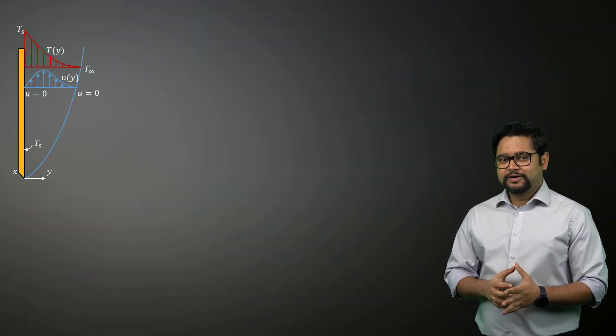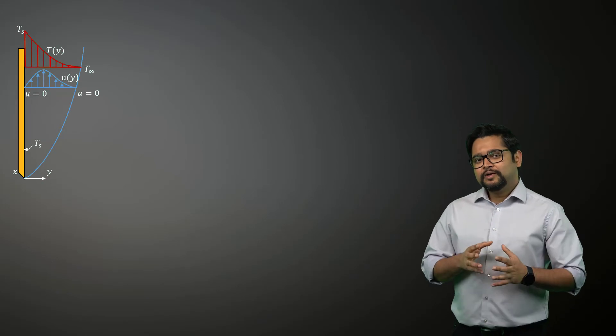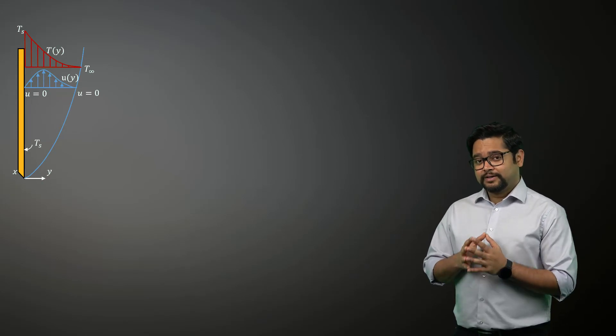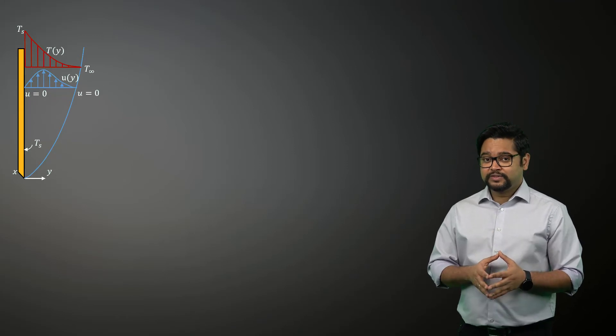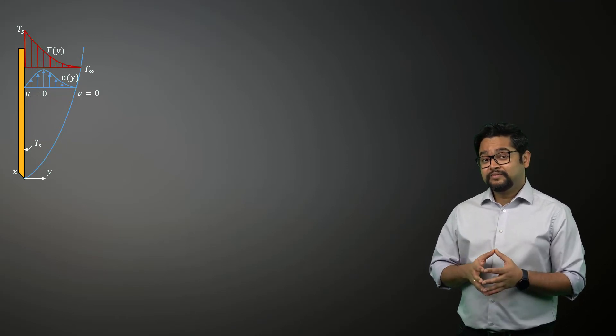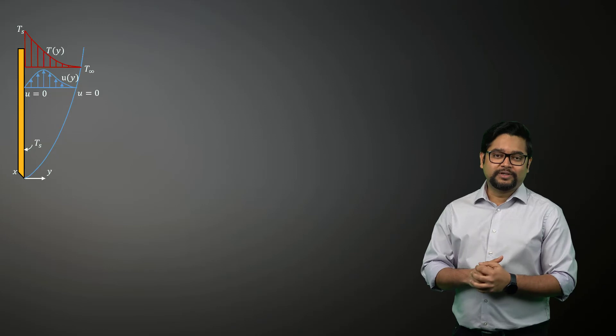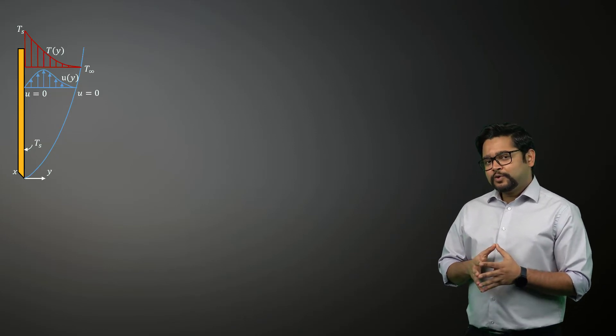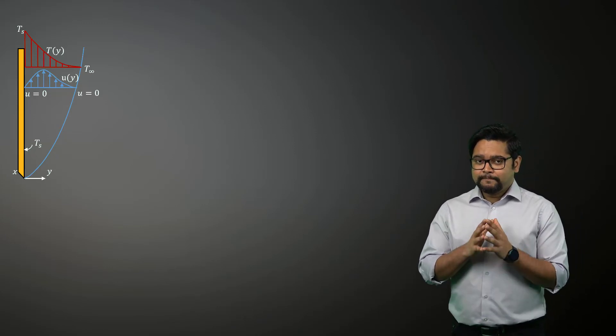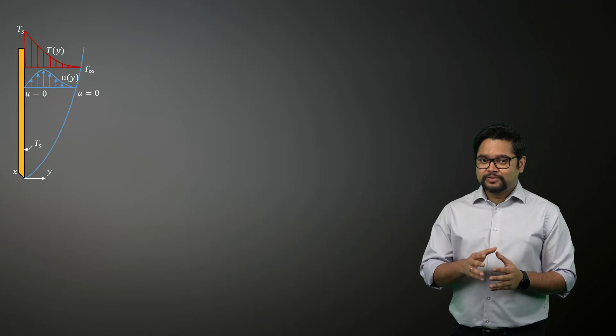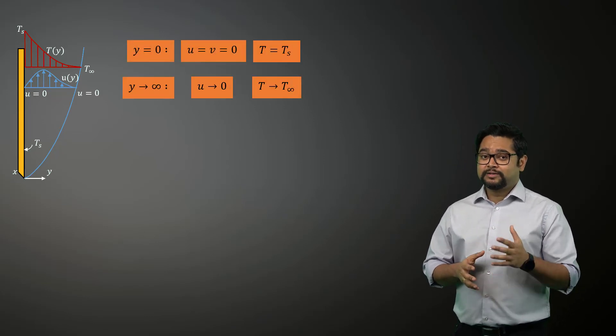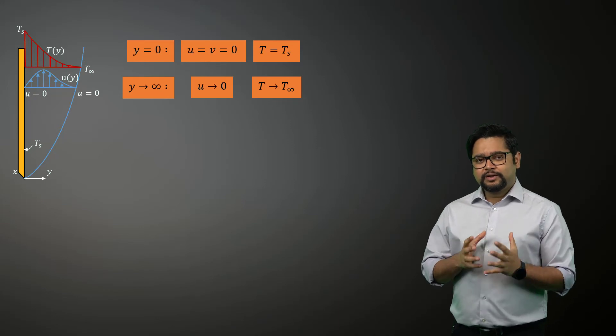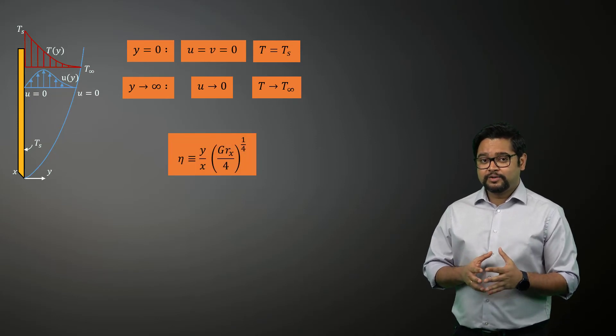Now let us analyze the boundary layers corresponding to natural convection. We begin our analysis by considering natural convection on an isothermal vertical surface immersed in an extensive ambient medium as shown here. The governing equations of natural convection must be solved subject to the following boundary conditions. Ostrach obtained a similarity solution by introducing a similarity parameter of this form.